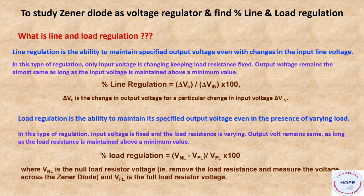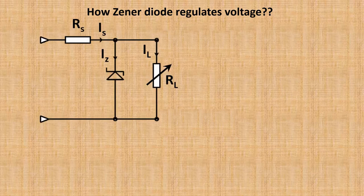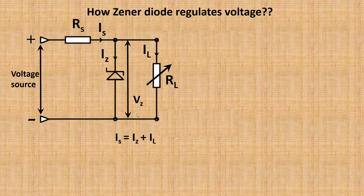Next is how the zener diode regulates voltage. Here we have a series resistor, and the zener and load resistance are in parallel to each other. We apply the voltage source here. The voltage across the zener V_Z is also the output voltage. The series current I_S equals I_Z plus I_L.